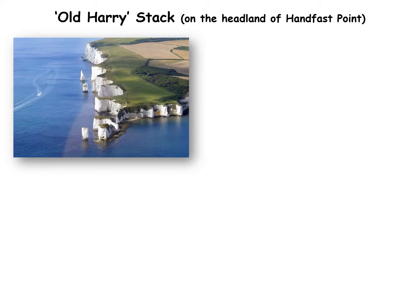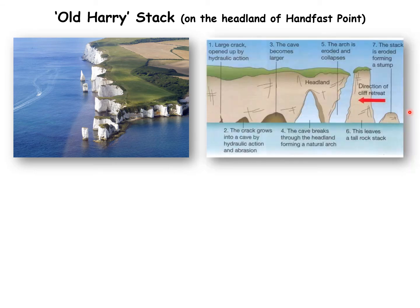On the Dorset coast we also have the stack known as Old Harry — this rock sticking up out of the sea at the end of the headland. Stacks form where a crack in a headland erodes into a cave; the cave can puncture all the way through the headland forming an arch, and then eventually the roof of the arch collapses, leaving a stack.